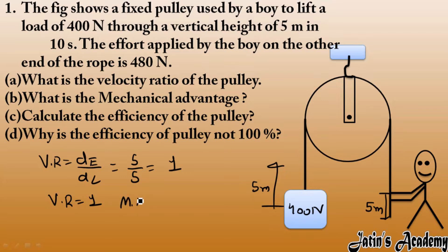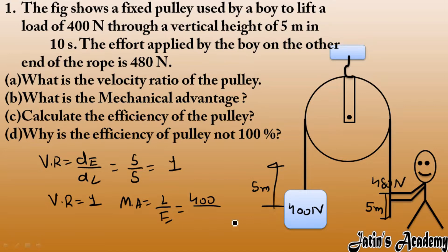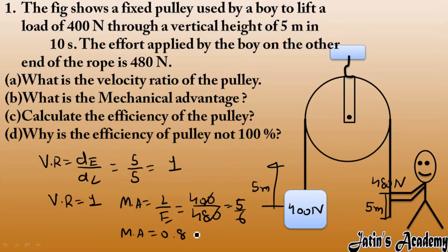Now we calculate mechanical advantage. Mechanical advantage equals load divided by effort. Load is 400 Newton and effort is 480 Newton. So mechanical advantage is 400 divided by 480, which gives 5 by 6, that is 0.83.